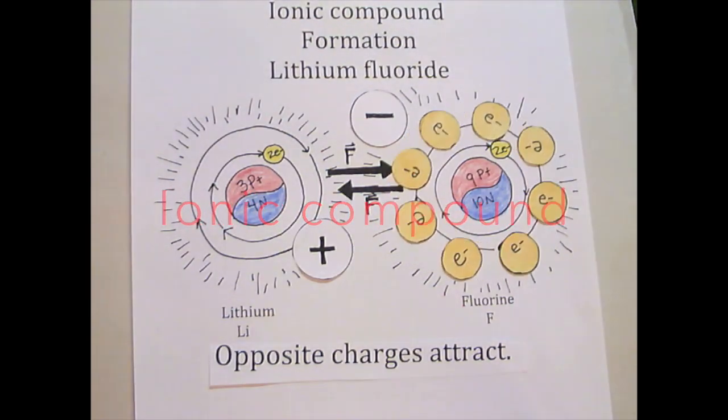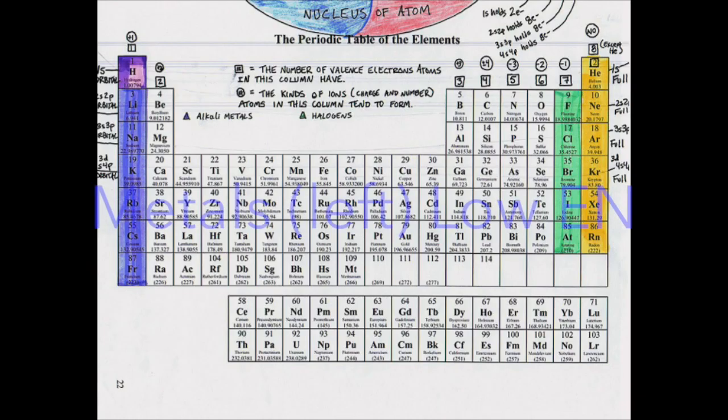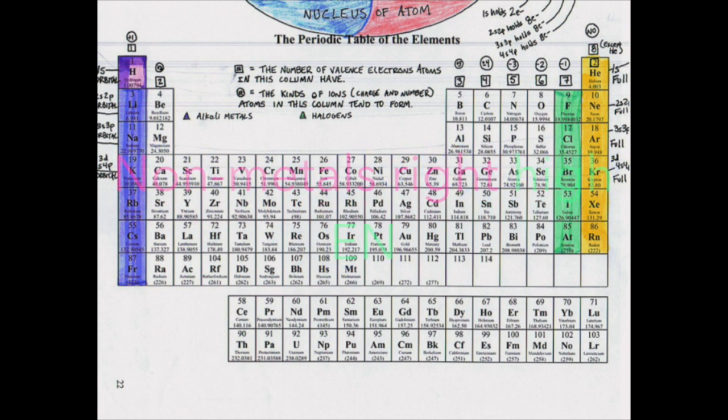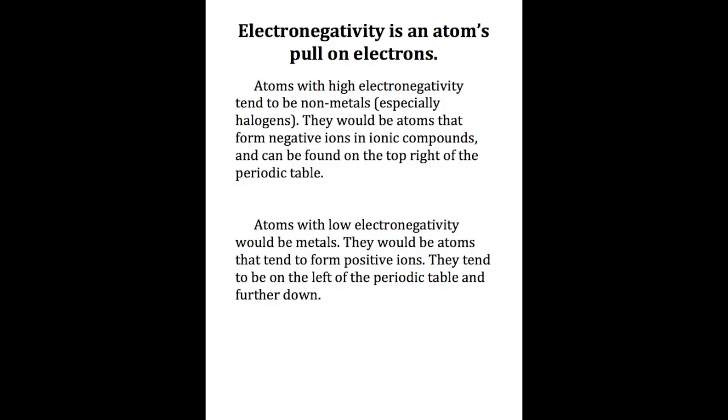Ionic compounds tend to form between metals, which have low electronegativity, and nonmetals, which have high electronegativity. Electronegativity is an atom's desire to get more electrons.